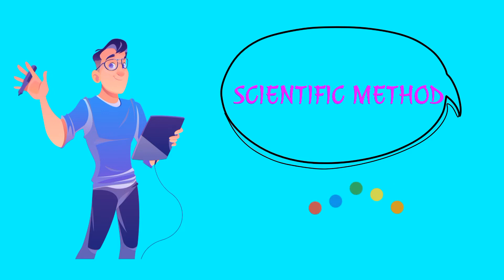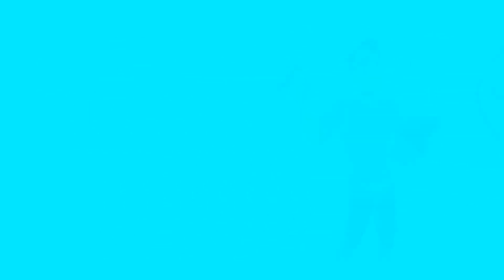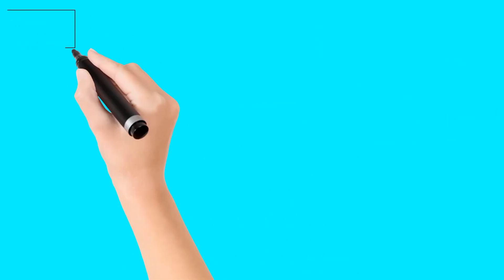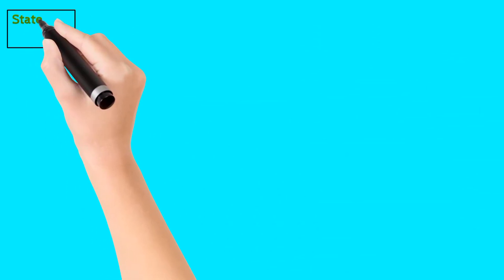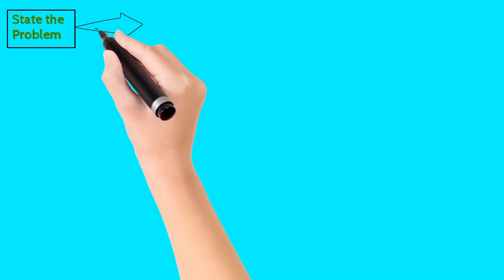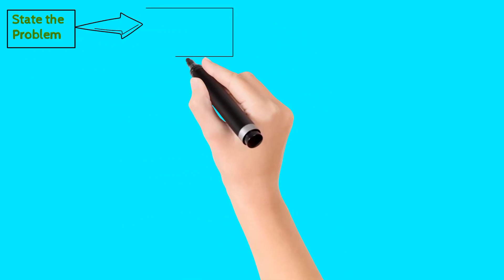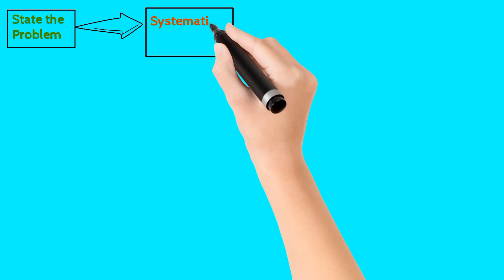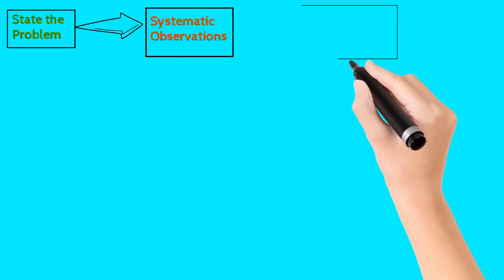The first and foremost step is to state the problem or to identify the problem. Next, we have to do systematic observations.